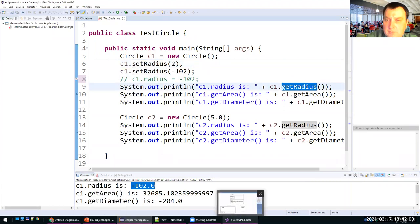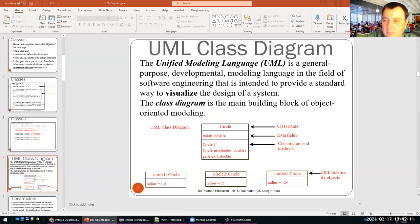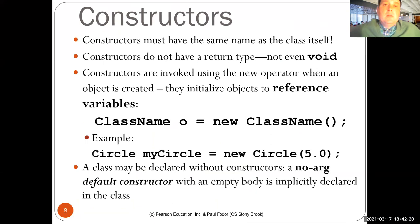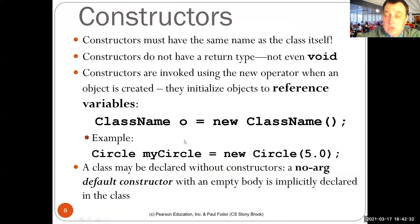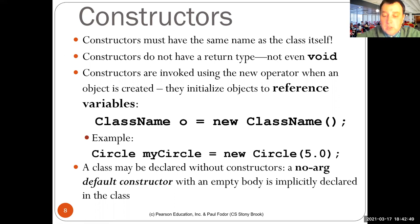So, constructors. Constructors have the same name as the class itself — in our case, Circle. Constructors do not have a return type, not even void, because they are constructing an object of that class — it's known that you are returning an object of that class. You can only invoke them with the new operator. Constructors are invoked with the new operator when the object is initialized, and what they return is a reference to that object. For instance: `Circle myCircle = new Circle(5.0)`. These are all reference types.